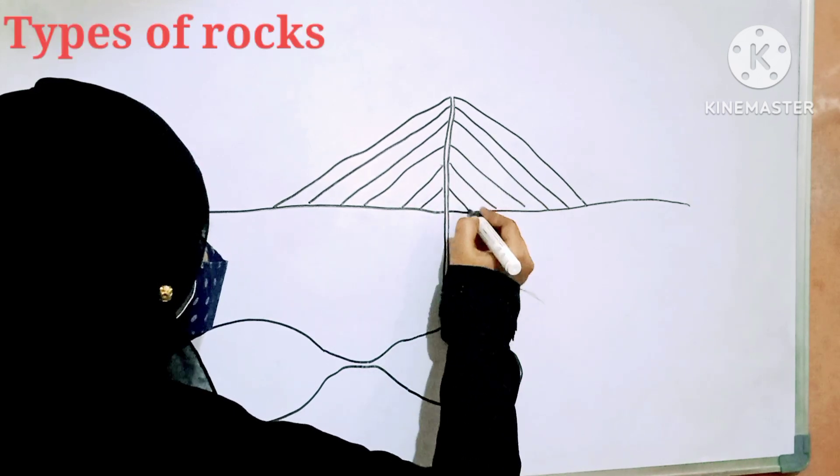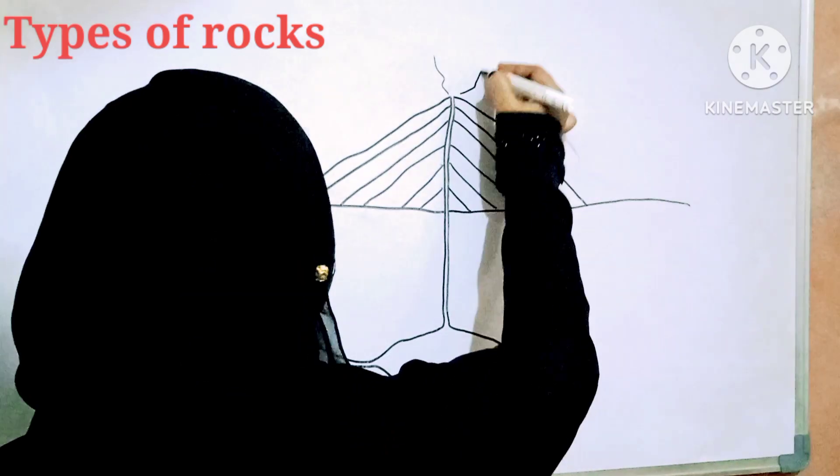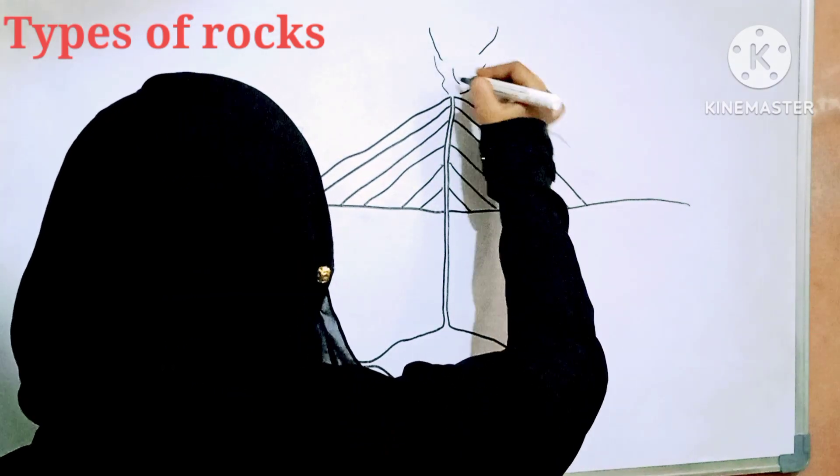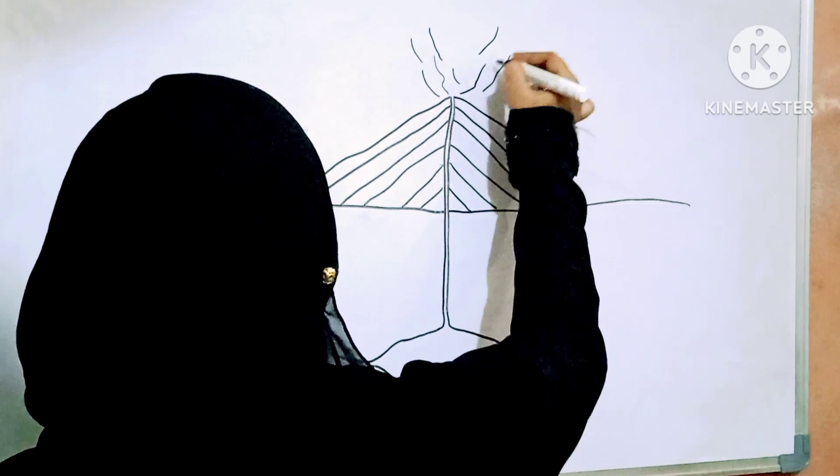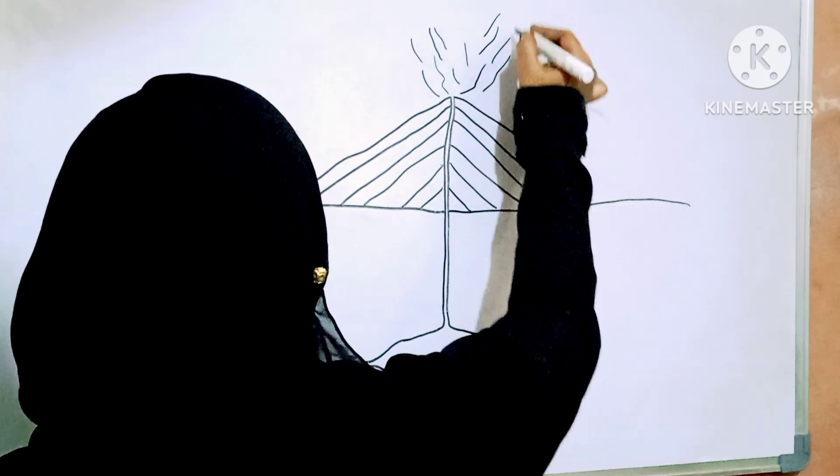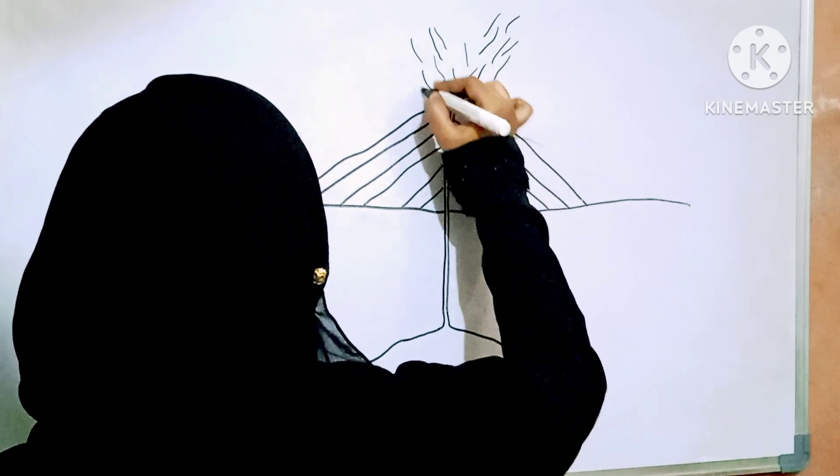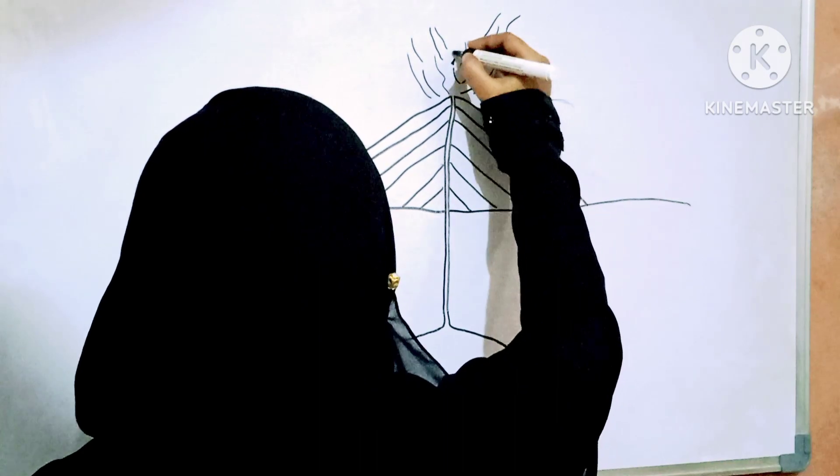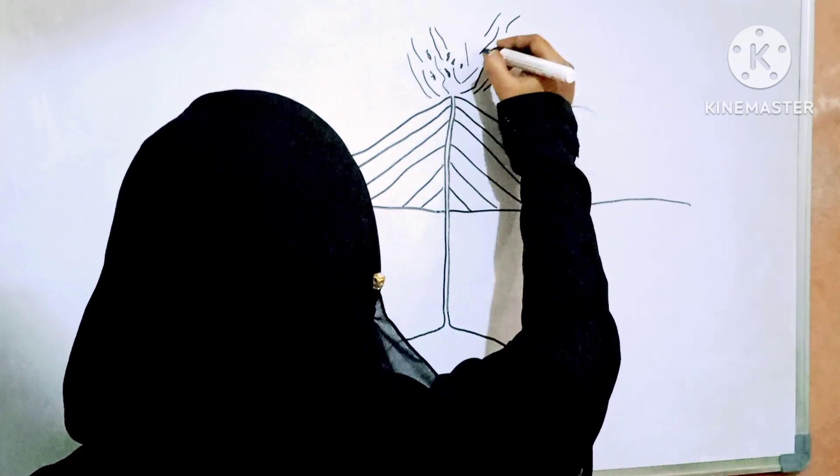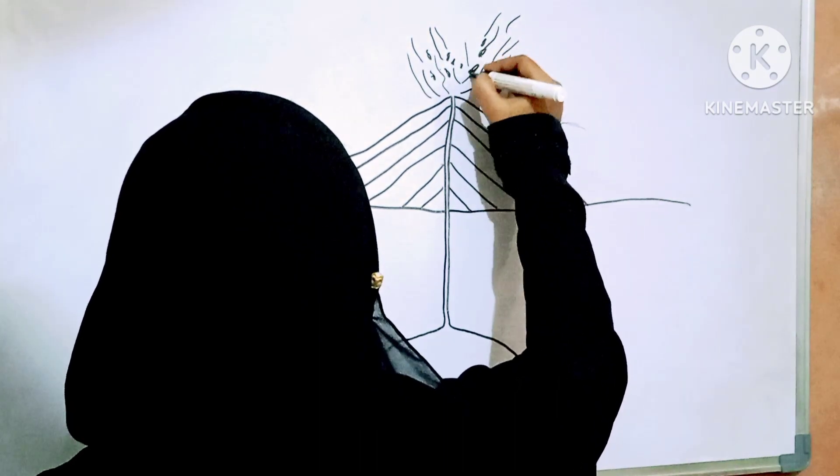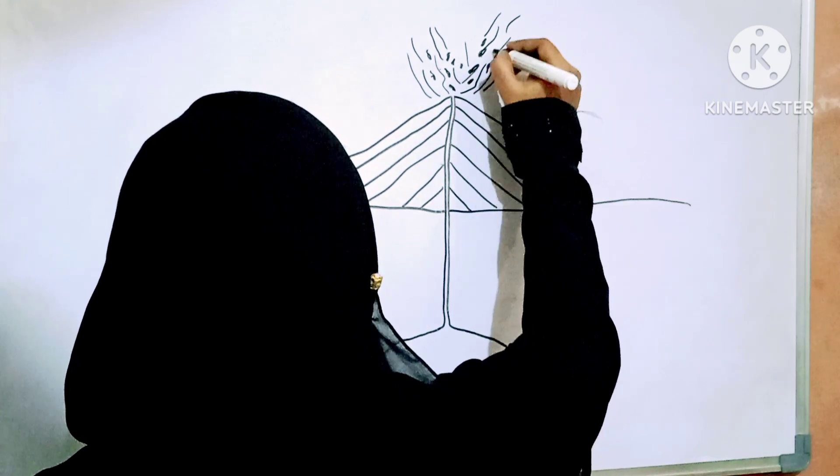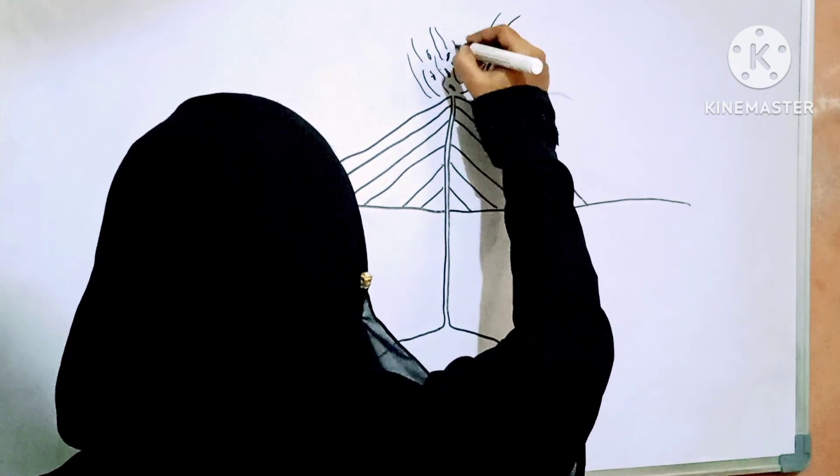There are two types of igneous rocks depending on where the magma cools to form the rock. When the magma cools sufficiently just inside the earth, it forms a bed of rock under the surface. These igneous rocks which are formed inside the earth are called intrusive igneous rocks.